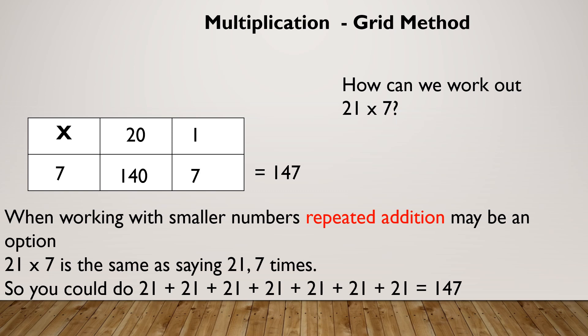Don't forget — when working with smaller numbers, repeated addition could be an option. 21 times 7 is the same as saying 21 seven times, so you could add 21 together 7 times.